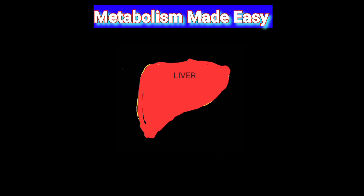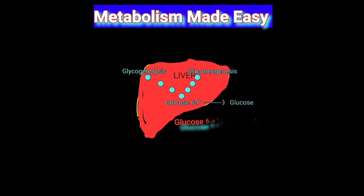Glucose production in the liver is a coordinated process between glycogenolysis and gluconeogenesis. Glycogenolysis breaks down glycogen, providing glucose from glycogen stores, whereas gluconeogenesis uses smaller molecules as precursors — like pyruvate and lactate —